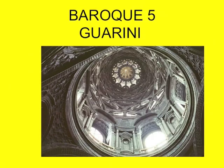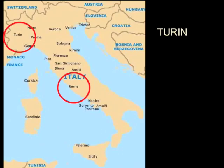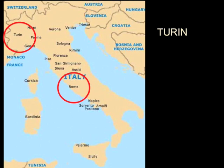We're going to continue talking about the Baroque today, but we're going to shift a bit north to the town of Turin. Turin is sort of interesting — it's tucked in around France. You have the Savoia there, and all these different chunks of Italy carved up. You don't have Italy as a unified country at this point; that doesn't happen until the 19th century. The political map of Europe is quite different in the Baroque period than it is now.